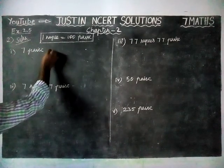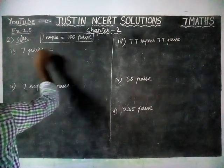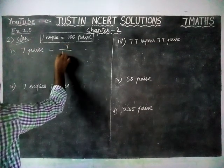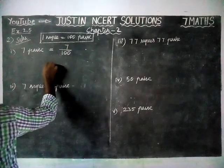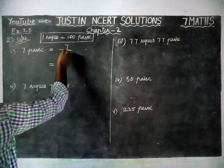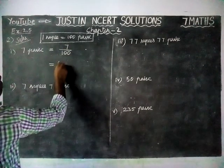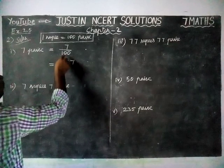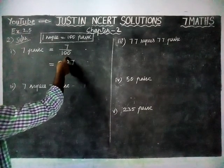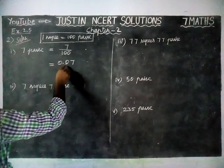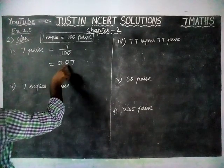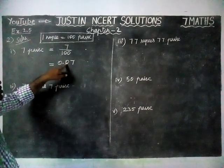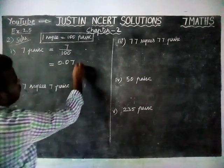So here, 7 paise is equal to — we are going to divide the 7 paise by 100. When we are dividing 7 by 100, we have to write 0.07. Because we have two zeros in the denominator, we have to make two decimal places. Only one digit is there, so we add another zero, giving us 0.07 rupees.